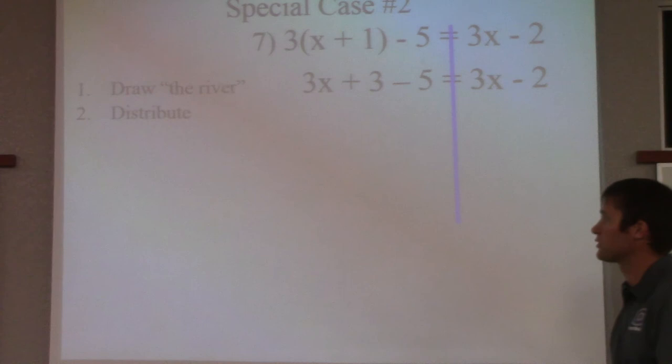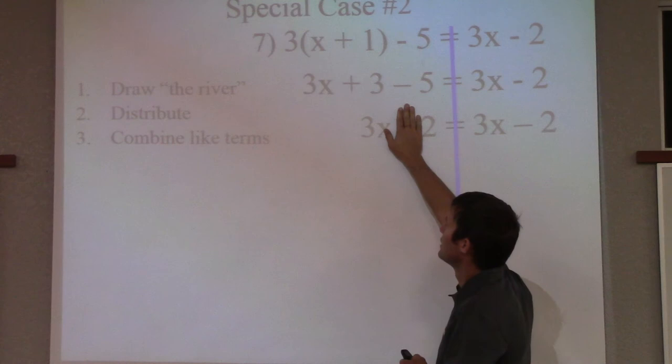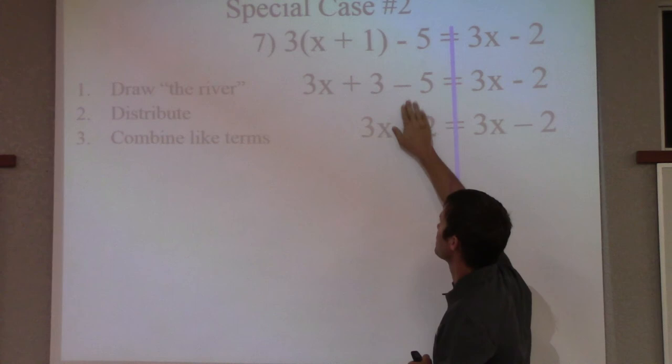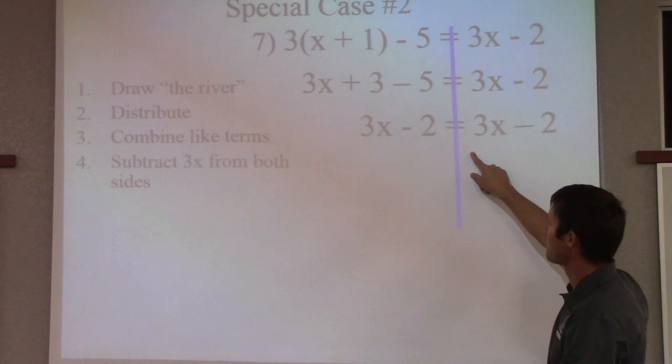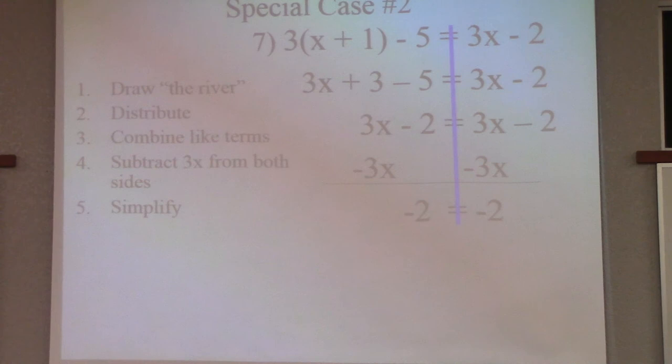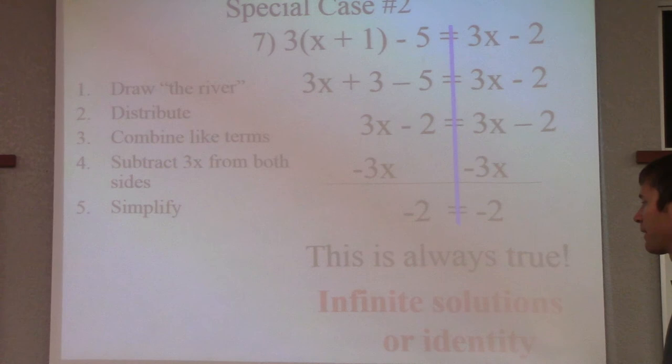We're going to do the same thing. So we distribute. 3 times x is 3x, 3 times 1 is 3. So we draw the river. We distribute. Now you can combine terms on this side. You have 3 minus 5. 3 minus 5 is negative 2. Now you have 3x and 3x. So we want to get rid of the x. It doesn't matter which one you move because they're the same. So this is positive, so we'll move it by subtracting it. And then you get negative 2 equals negative 2. Is that true? Does negative 2 equal negative 2? Yes. So this would be infinitely many solutions. Essentially saying any x value you plug in will work.